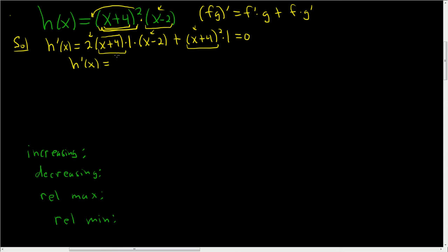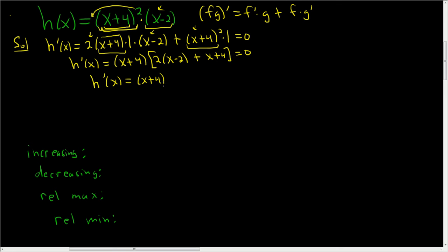Factoring out (x + 4), we end up with [2x − 2 + x + 4], and we set the whole thing equal to 0. So h prime of x equals (x + 4)(3x), since 2x + x = 3x and −4 + 4 = 0. Setting each factor equal to 0, we end up with two critical numbers: negative 4 and 0.